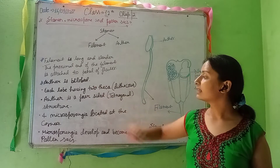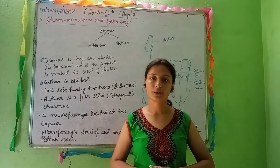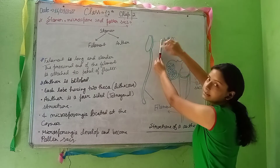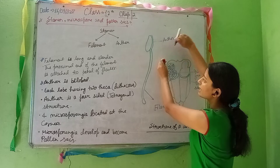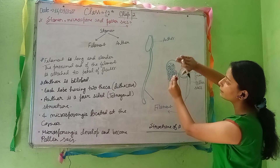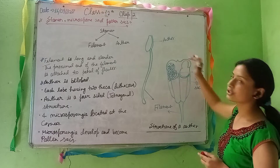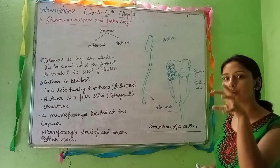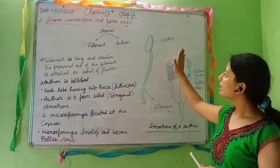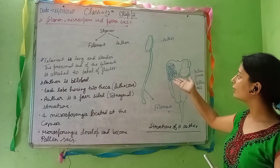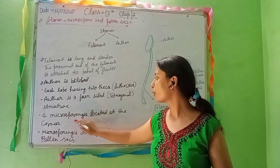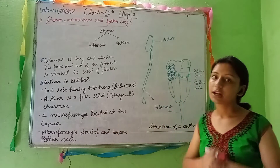Now let's look at the anther's structure. The anther is tetragonal in shape. If we view it in 3D, you can see the tetragonal structure clearly — it has four corners: one, two, three, four. Each corner contains one microsporangium, so the anther has four microsporangia located at its corners.